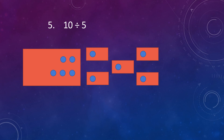Now we are left with 5 dots to divide. Again, put a dot in each box — take the first dot and put it in the first box, take the second dot and put it in the second box, take the third dot and put it in the third box, take the fourth dot and put it in the fourth box, take the fifth dot and put it in the fifth box.